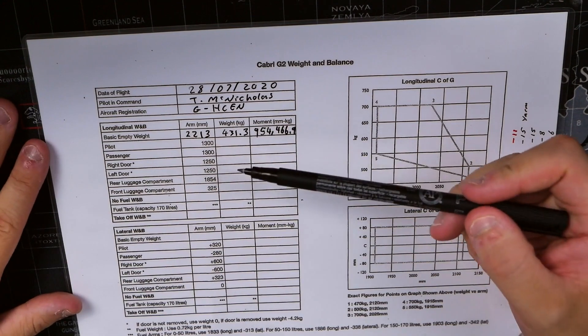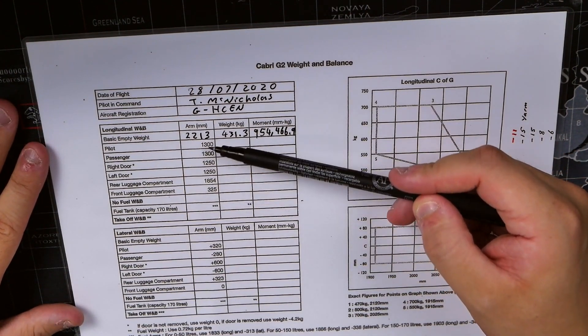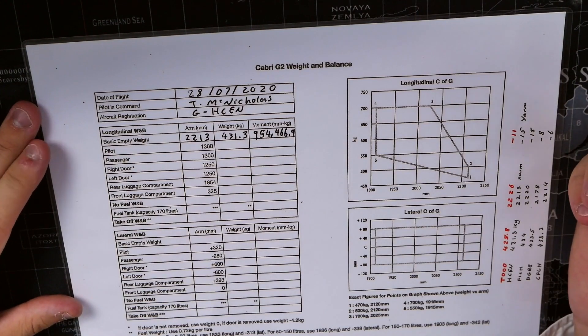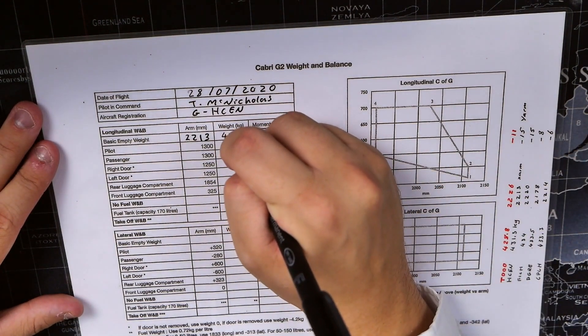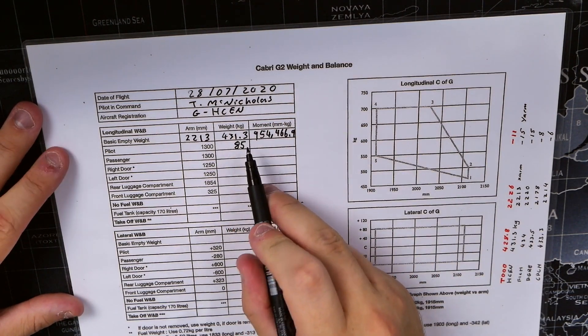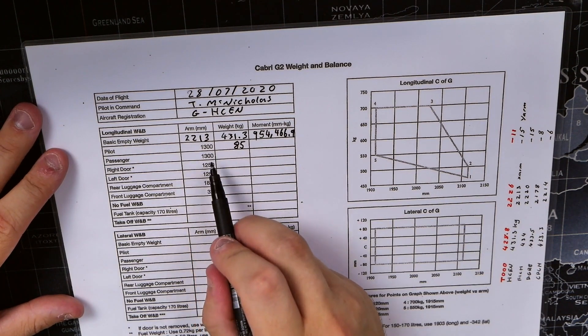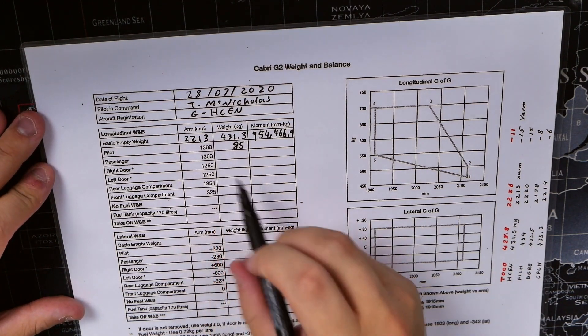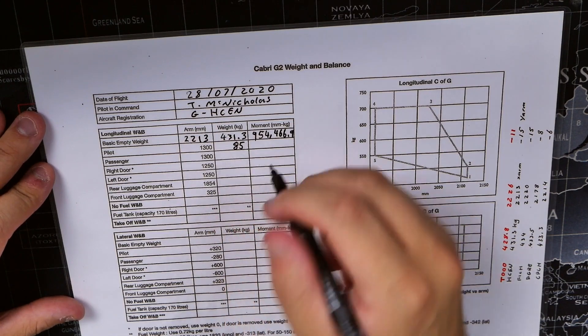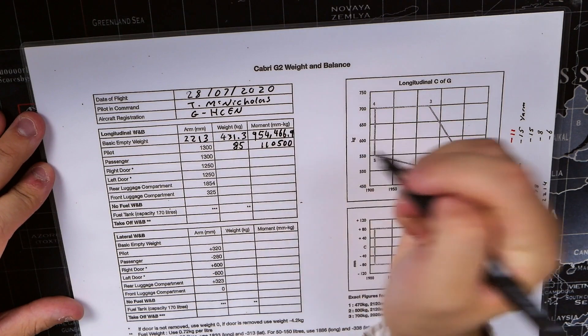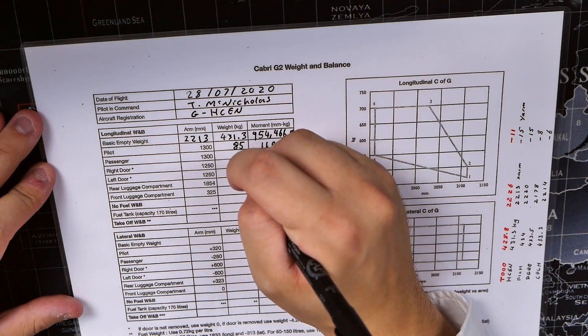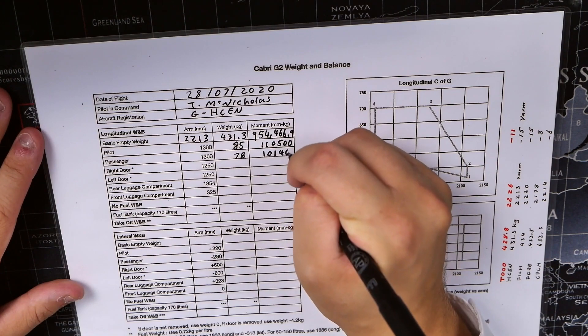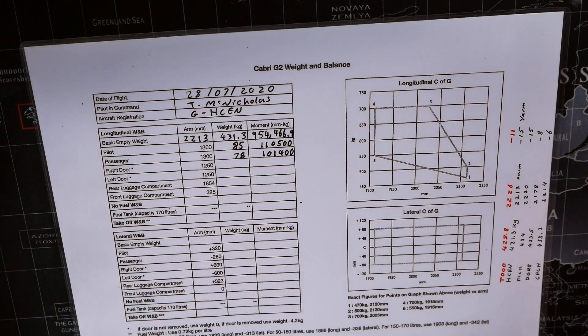From here on, it tells you what the arm distances are for different weights. For example, myself as the pilot, I am 85 kilograms, so we put that in the box there. The longitudinal arm for the pilot seat is 1300 millimeters from the datum point. Just like we've done before, we times these two together to get 110500, and that's our moment. Let's say I have a passenger of 78 kilograms, so we times those two together and we get 101400.